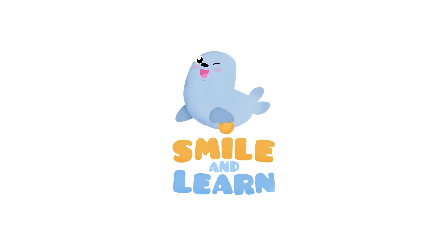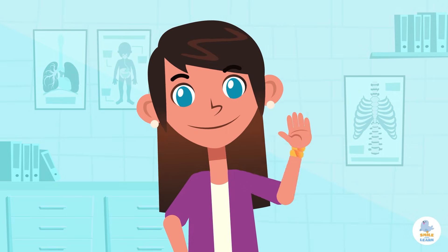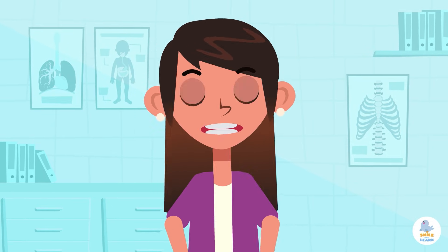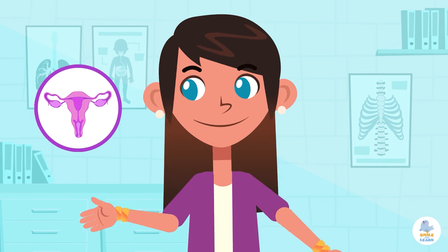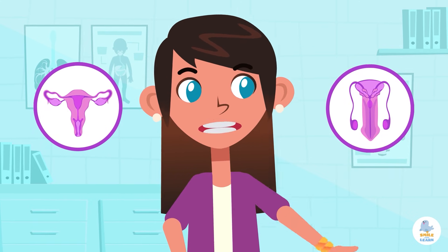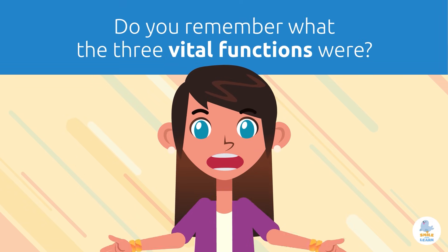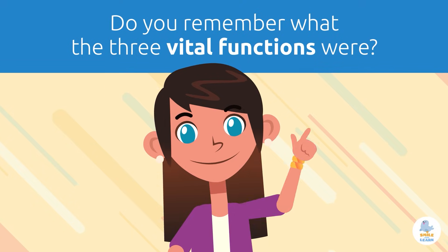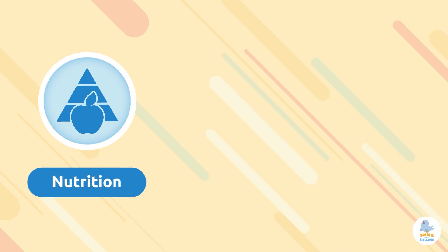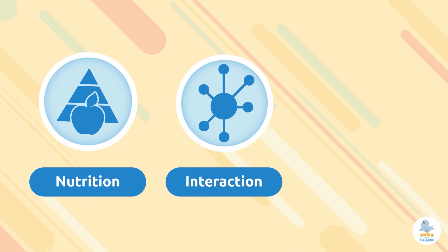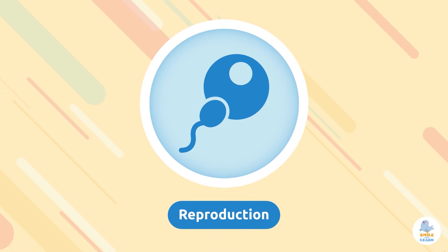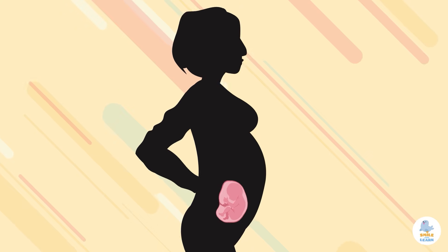Hey friends, today we're going to learn about another system of the human body: the female reproductive system and the male reproductive system. Do you remember what the three vital functions were? Exactly — nutrition, interaction, and reproduction. Today we'll focus on reproduction: it's the biological process that ensures a species is maintained through the birth of new human beings.